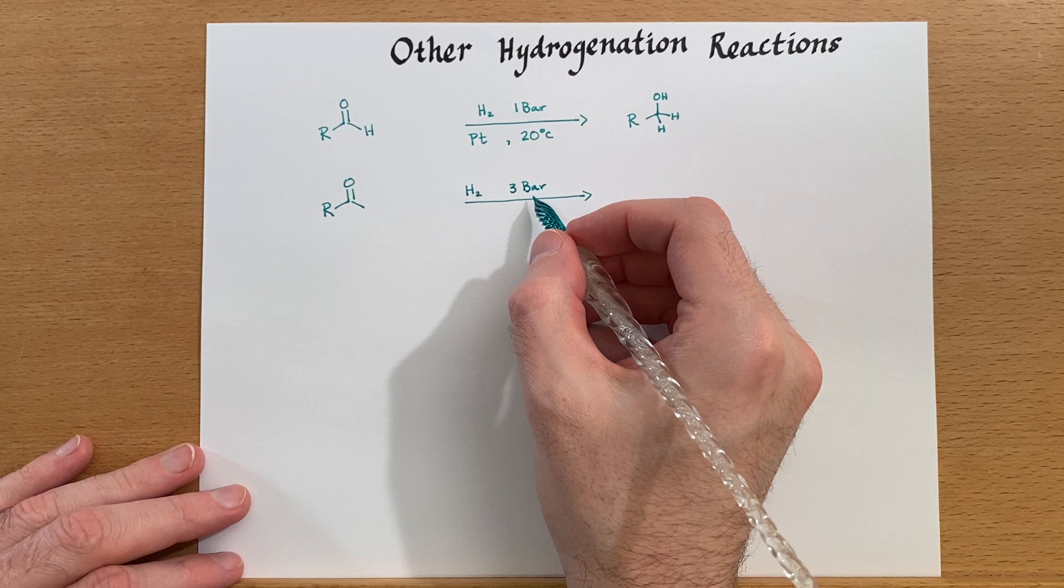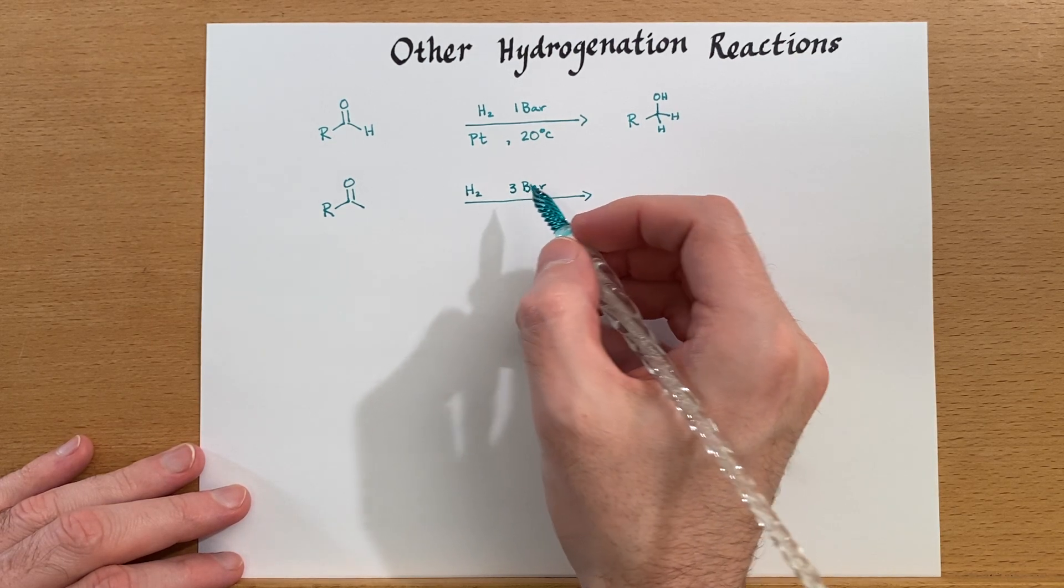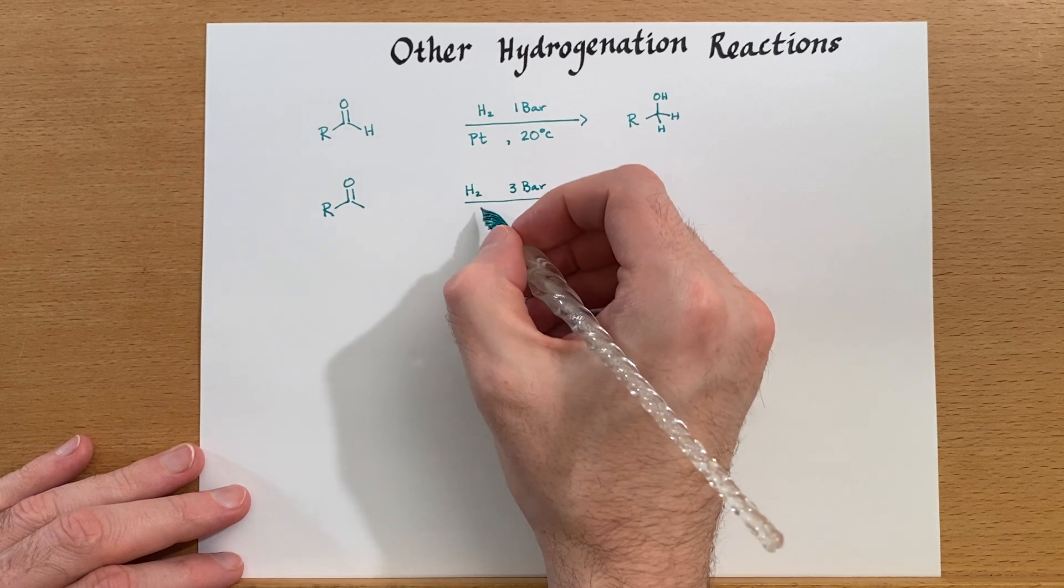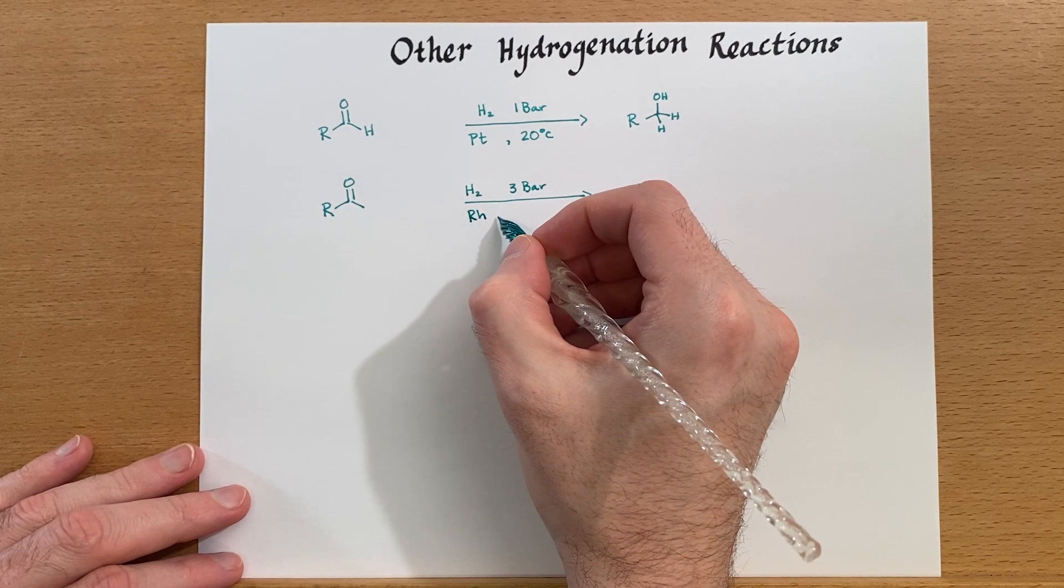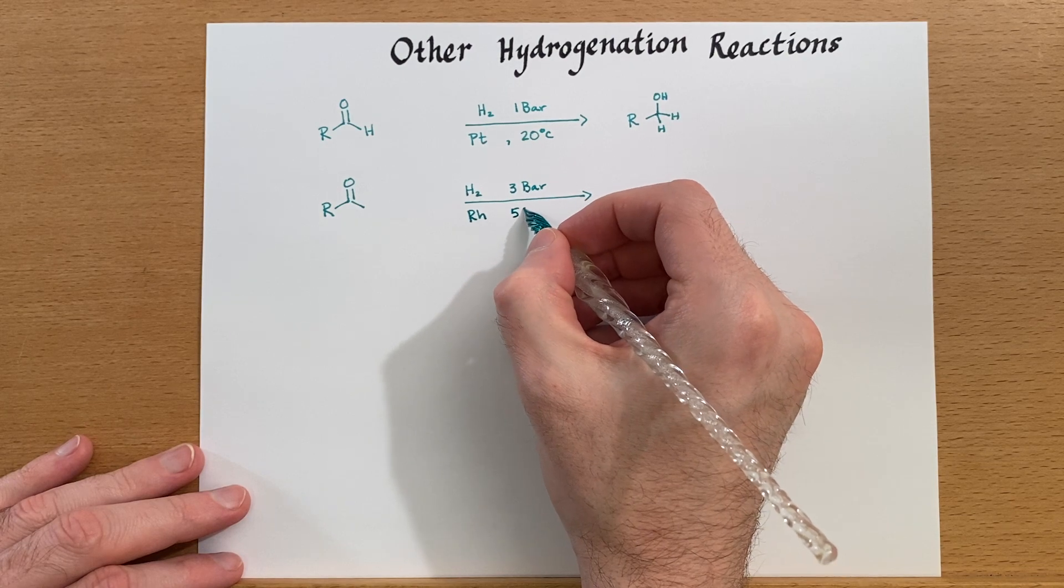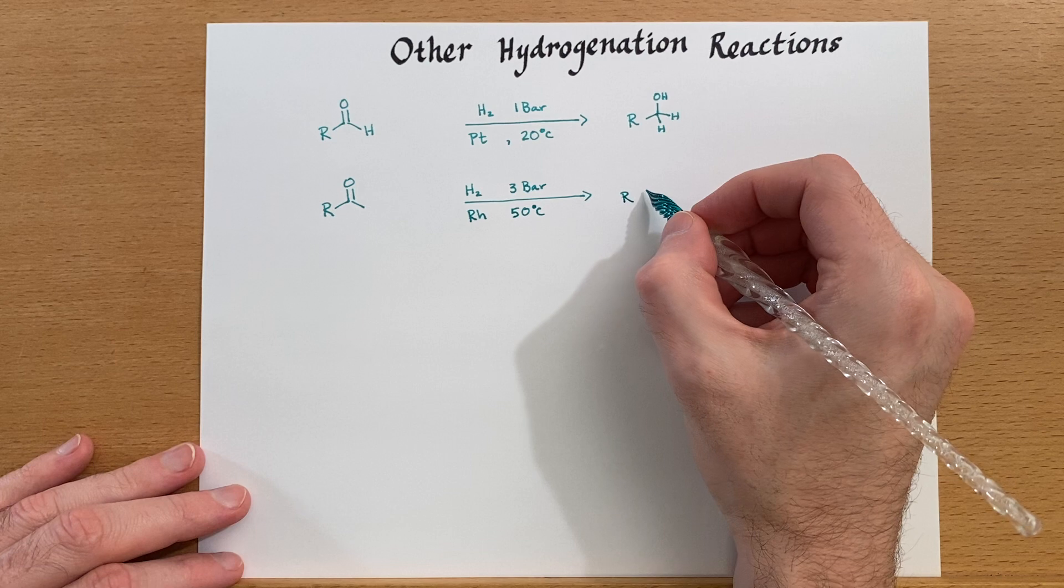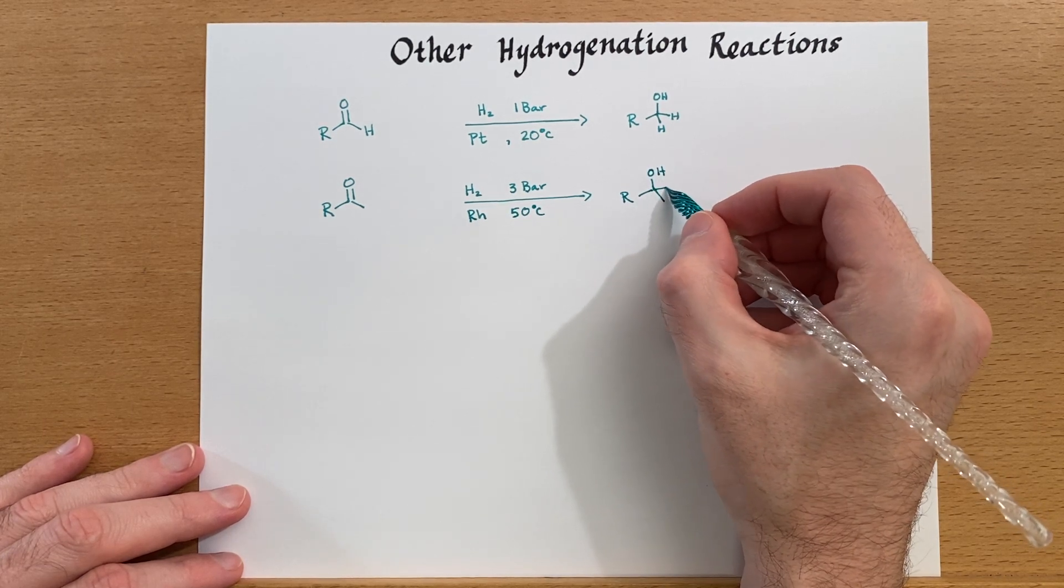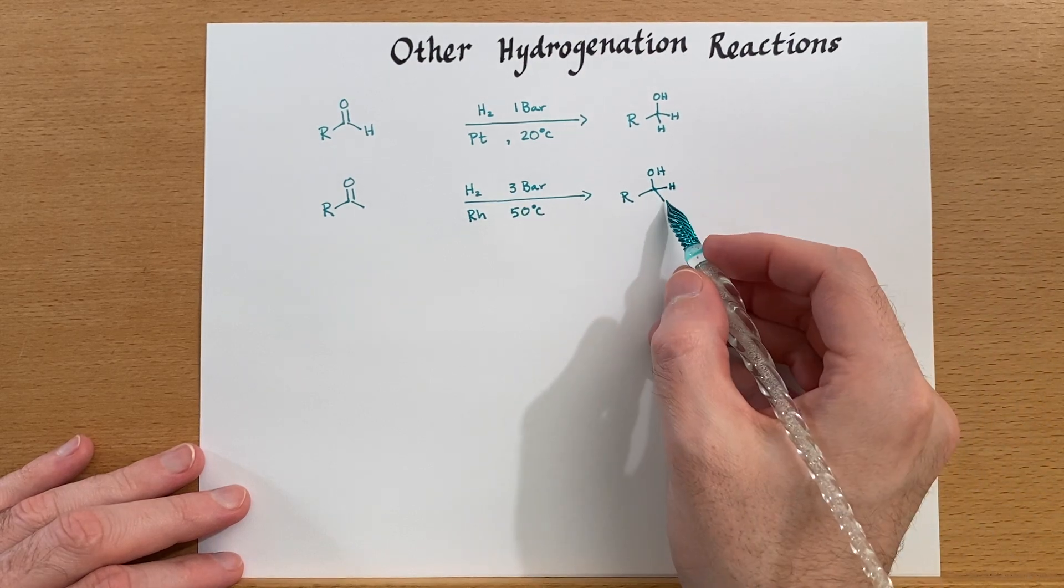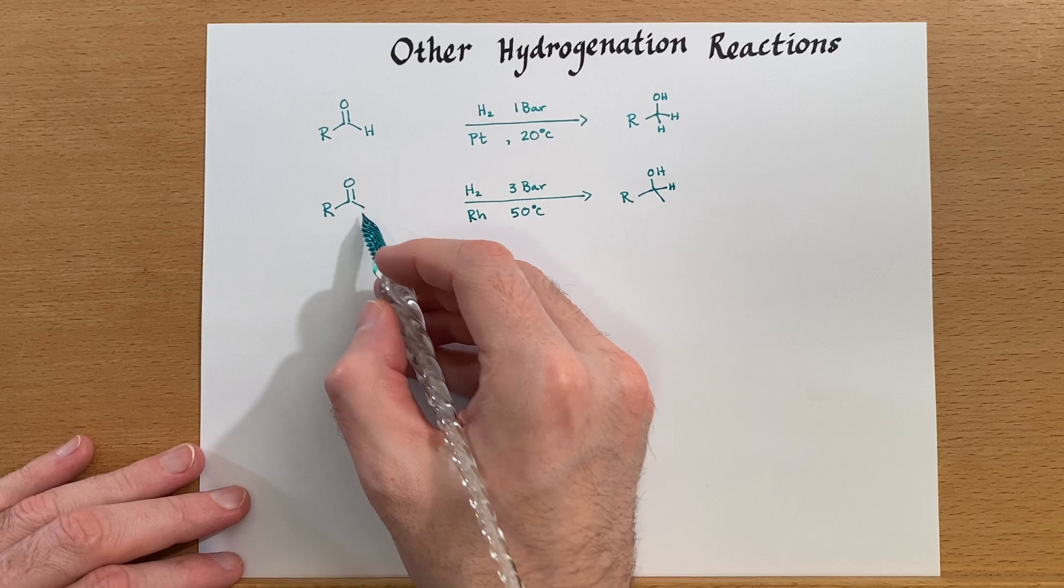We're going up three times the pressure to three bar. This is still not very high pressure, but it's getting higher. We'll use a rhodium catalyst and we must increase the temperature, and in this case we'll make a secondary alcohol. And there's the methyl group that we had right here.